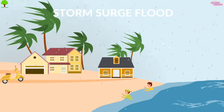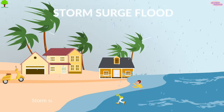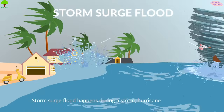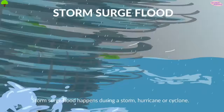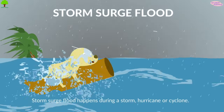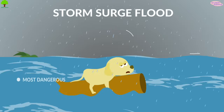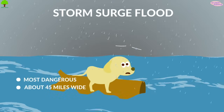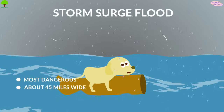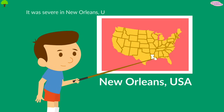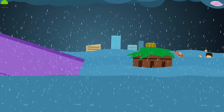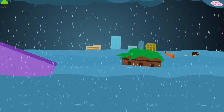Storm surge flooding happens during a storm, hurricane, or cyclone. It is a strong wave of water that sweeps onto land. It's an incredibly dangerous threat for people living along the coast. It was severe in New Orleans, USA during Hurricane Katrina in 2007.